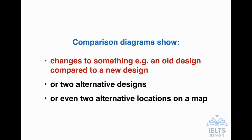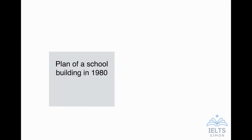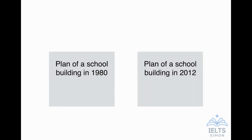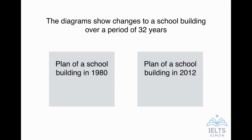Two pictures showing an old design and a new design. Here's an example similar to a real question in one of the IELTS books. We see a plan of a school building, for example in 1980, showing buildings, car parks, school fields, etc. And then next to it, a plan of the same school building in 2012. There are probably some changes from one plan to the next, and we have to compare those changes. The question would be something like: 'The diagrams show changes to a school building over a period of 32 years.' I call this a before and after diagram.